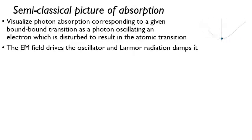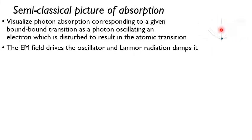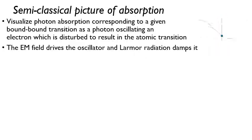You have an oscillator here; the electromagnetic field is what's driving it. And because the electron is accelerating, you have Larmor radiation damping it. So it's a driven, damped harmonic oscillator. The book To Build a Star works through the math and gets the corresponding classical cross-section for this absorption.